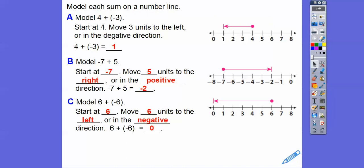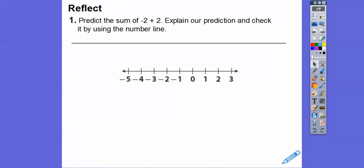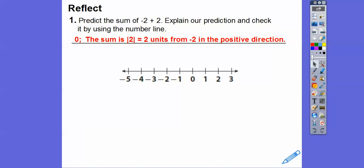Well, 6 plus negative 6 took us to 0, so that's what's going to happen here. Negative 2 plus 2 — if I start at negative 2 and add 2, going in the positive direction, it's going to take me to 0. So the prediction is it's going to be 0. The sum is 2 units to the right in the positive direction from the first number, negative 2. Start at negative 2, go 2 units to the right — and check it by using the number line. Checked off.